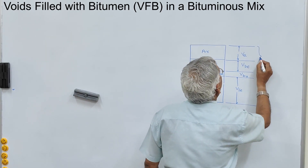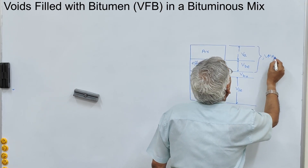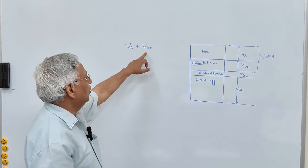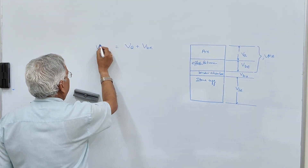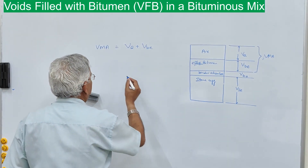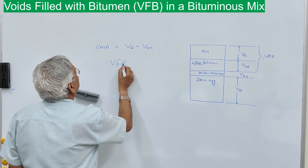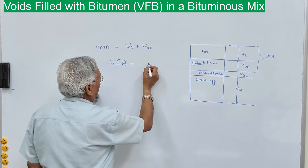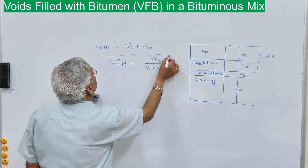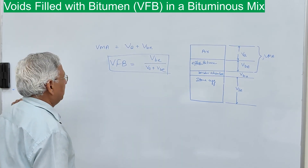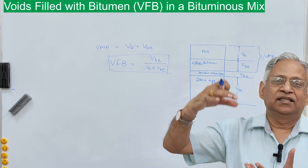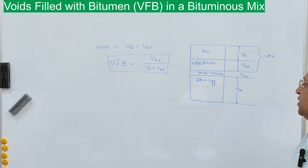VA plus VBE — air voids plus volume of effective binder — is voids in mineral aggregates, VMA. The proportion of VMA which is filled by VBE is called VFA or VFB, volume filled with binder or bitumen. That is VBE divided by (VA plus VBE), and that is the general equation to calculate VFB or VFA. It is also called asphalt-void ratio, because it is basically the asphalt filling the voids in mineral aggregate.